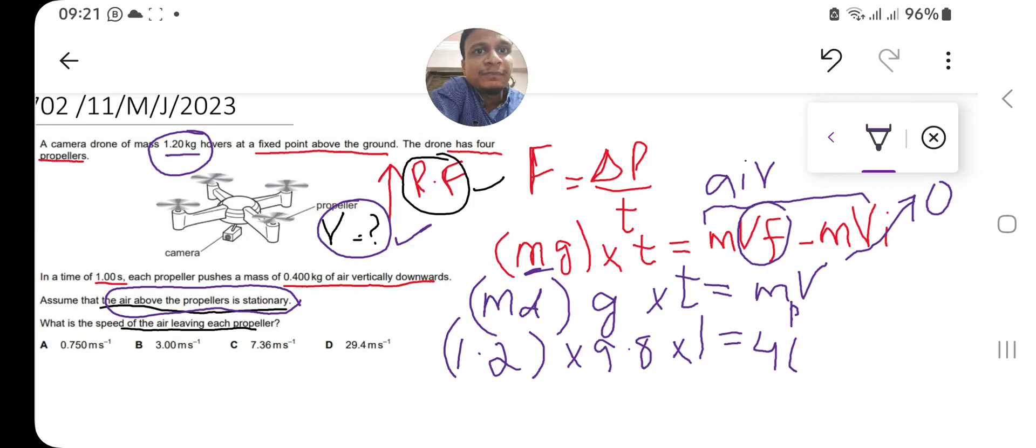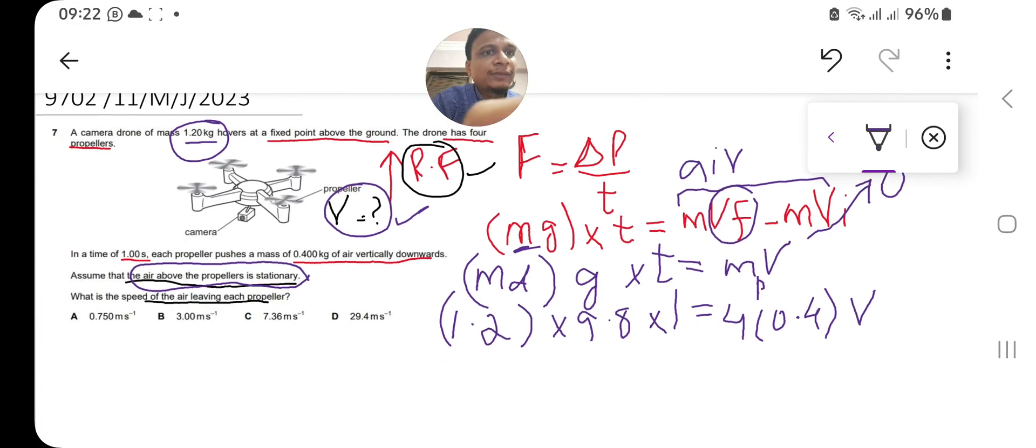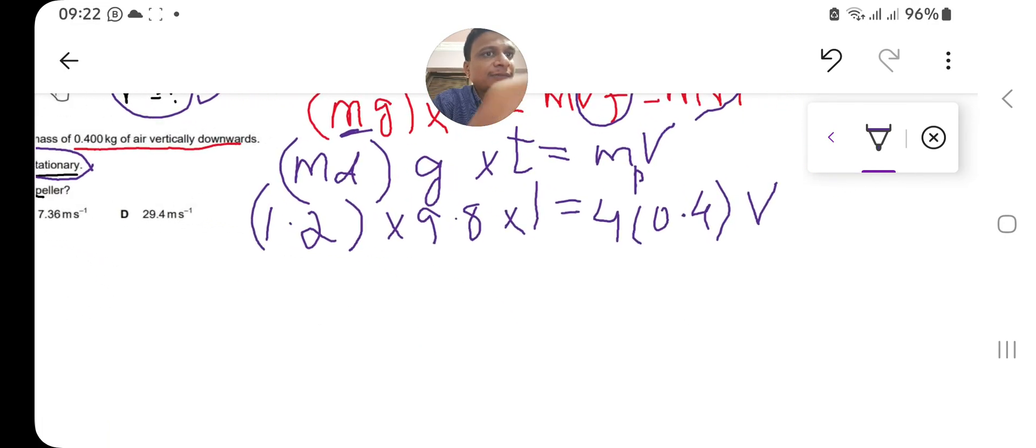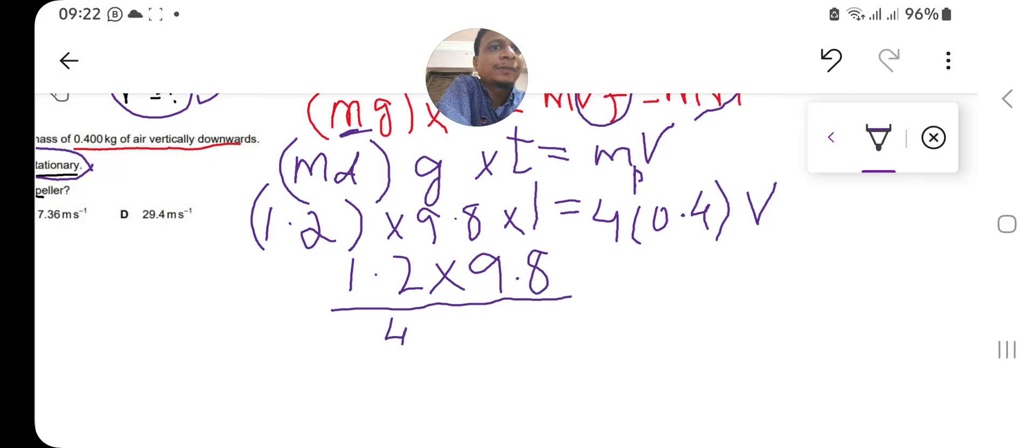We take g as 9.8, time is one second. Mp means mass of propeller, so four multiplied by each mass of 0.4, and v remains the same because v is the speed of air leaving each propeller. After dividing, we get 1.2 multiplied by 9.8 divided by 4 into 0.4 equals v.